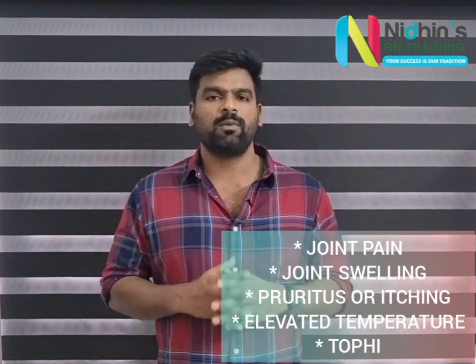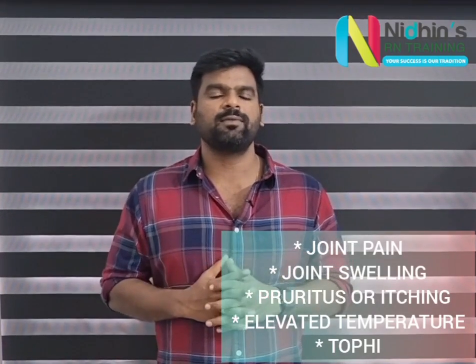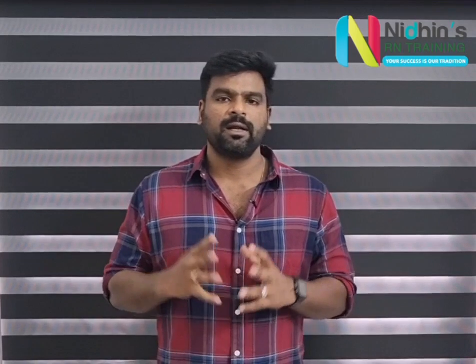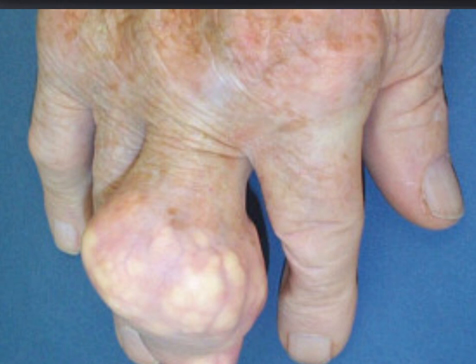We can also see the most classical feature, that is TOPHI — T-O-P-H-I. TOPHI means a chalky white deposit under the skin due to increased sodium urate or uric acid deposit. If uric acid is high, that leads to chalky white deposits under the skin, which is called TOPHI.